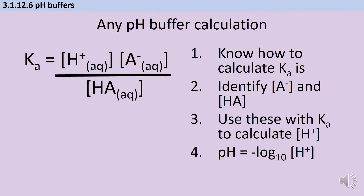Students are often quite intimidated by the fact that we've got essentially one calculation — how to work out what the pH of a buffer is — and then I'm saying there are three different ways we could get there, and they feel like they won't know which version they're meant to be doing. But the truth is that they're all doing the same thing. They're all based on Ka, the weak acid dissociation constant. If you're not confident with how to write an expression for Ka or how to use it, then you need to look back at video four, the weak acids and bases video.